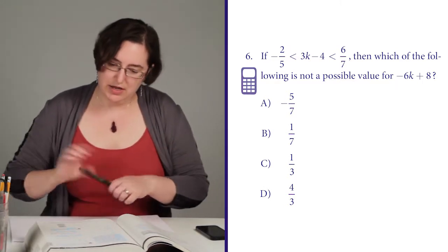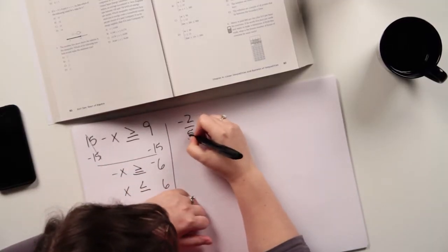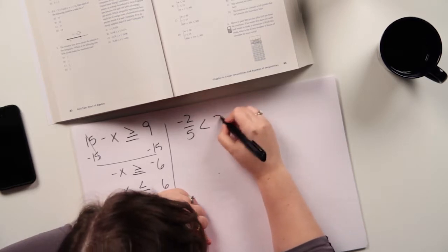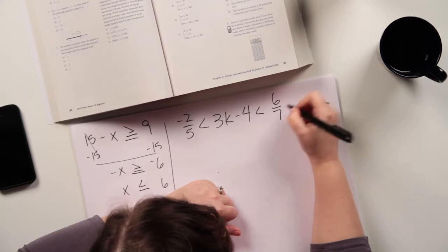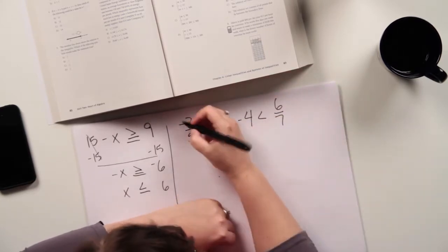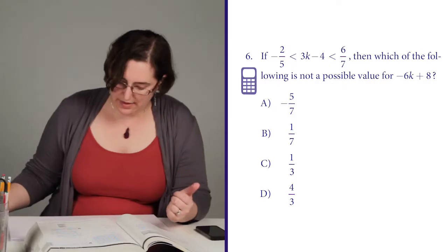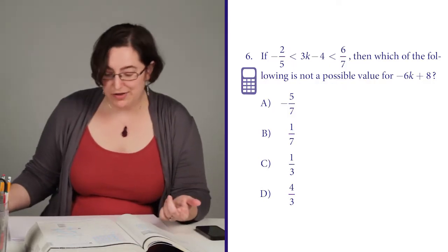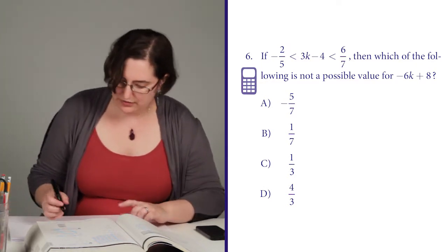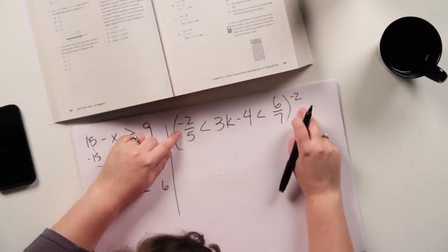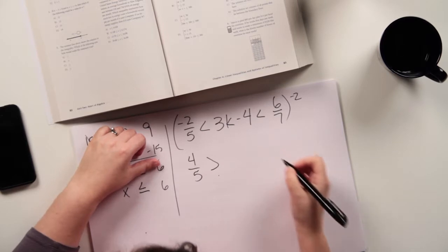I'm going to take negative 2 fifths less than 3k minus 4 less than 6 sevenths and multiply the whole darn thing by negative 2. Now, since this is an inequality and I'm multiplying by a negative number, I'm going to have to flip all of my signs, but we'll get to that. So piece by piece,